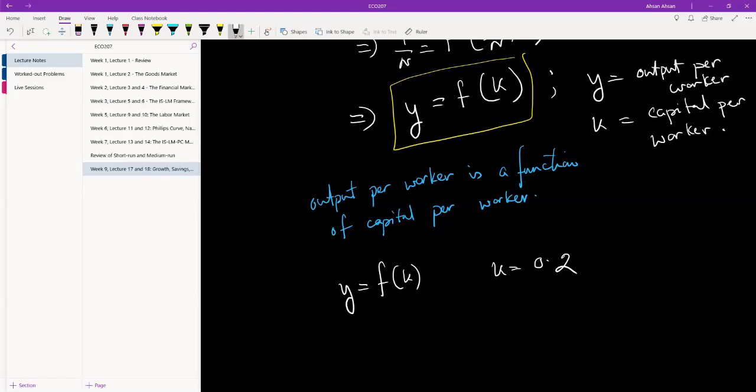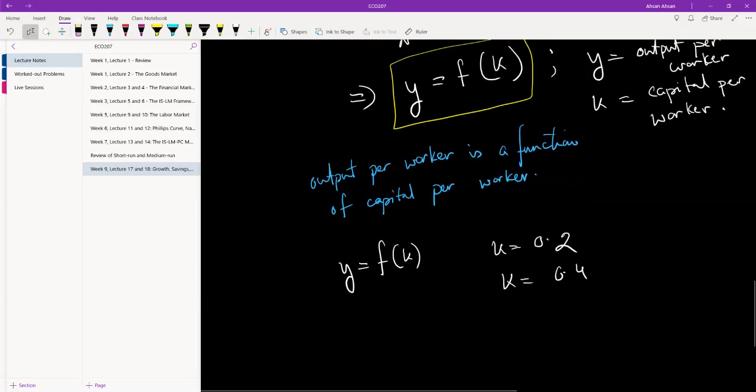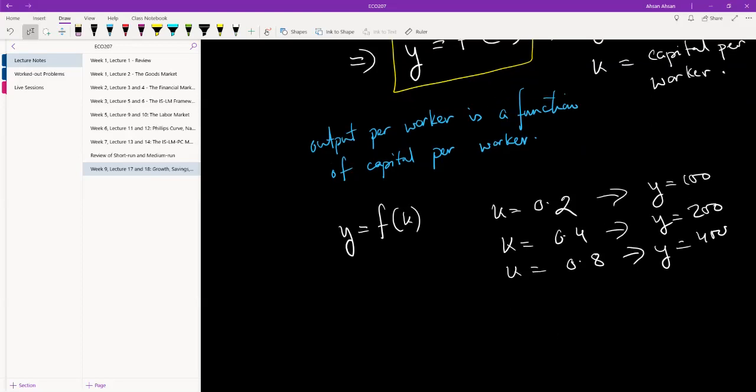So constant returns to scale would mean that if we increase this to 0.4, so we doubled how many laptops are available in the economy, our output should increase. And then if we doubled this again, our output should double once again. So in this case, if our output was 100 over here, our output will become 200, over here our output will become 400 and so on. And I'm just talking about doubling, you can triple, you can quadruple, whatever. Interesting, but is that really realistic? Think about this for a little bit.